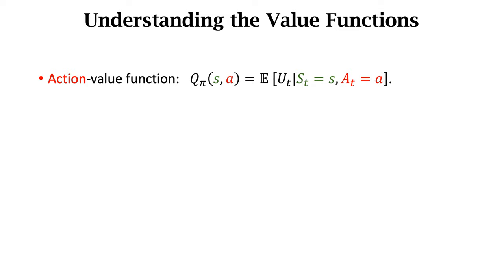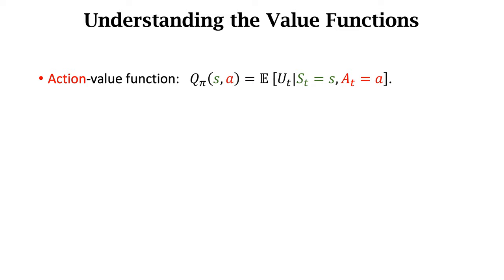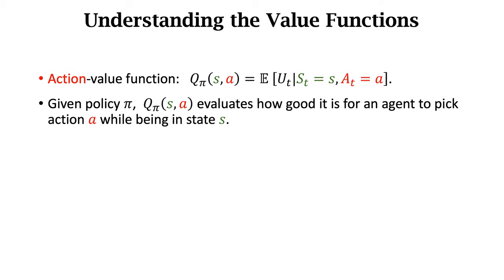In sum, we have studied two types of value functions. The first is the action value function q_π. It depends on state s, action a, and policy π. It is the conditional expectation of the return UT. The expectation is taken with respect to all future states and actions except st and at. Given policy π, q_π evaluates how good it is for an agent to pick action a while being in state s. q_π indicates how good an action is. That is why q_π is called the action value function.